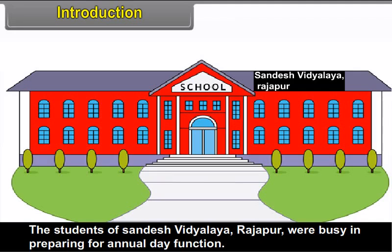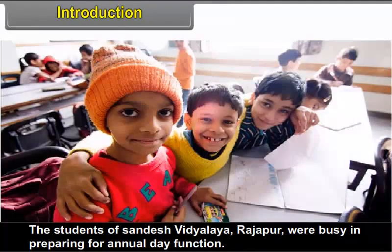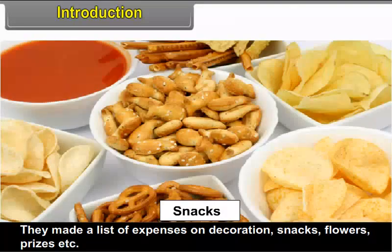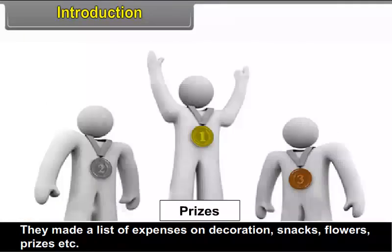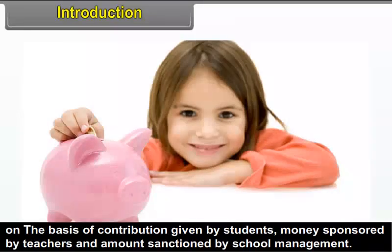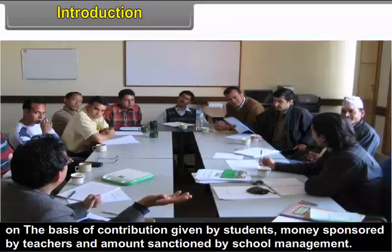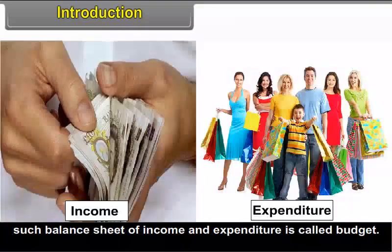4.1 Introduction. The students of Sandesh Vidyalaya Rajapur were busy in preparing for the annual day function. They made a list of expenses on decoration, snacks, flowers, prizes, etc., on the basis of contribution given by the students, money sponsored by teachers, and amount sanctioned by school management. Such a balance sheet of income and expenditure is called a budget.